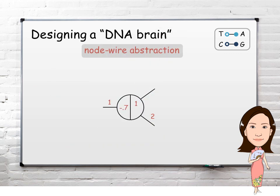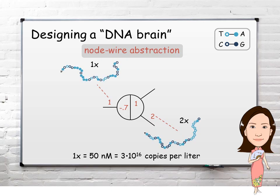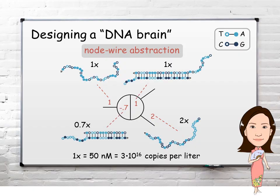Designing such a DNA brain is easier with the help of a node-wire abstraction. Every number above a wire indicates a single strand, with its amount relative to a standard concentration. Every number inside a node indicates a double-stranded molecule, with negative numbers indicating a threshold.